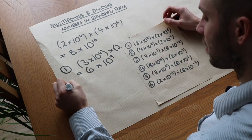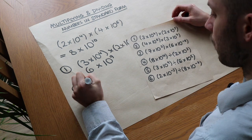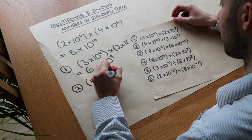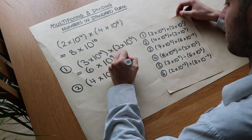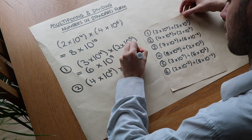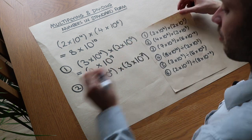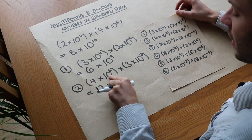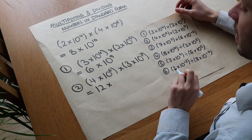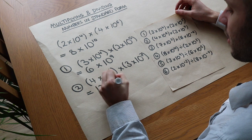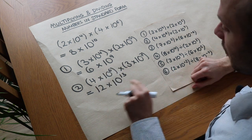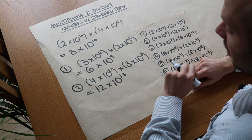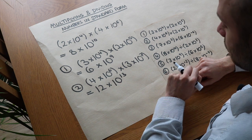What about this one? This one is a bit harder. We've got 4 times 10 to the 6 times 3 times 10 to the 7. Now if we do our usual thing, 4 times 3 is 12, and 10 to the 6 times 10 to the 7 we add the powers — 6 plus 7 is 13. The problem this time is that this number is not in standard form.